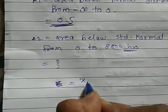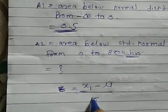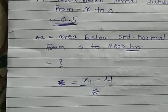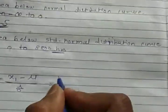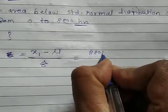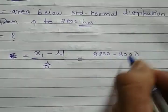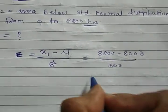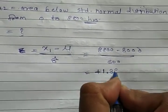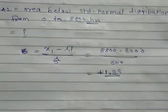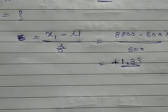Substituting the values: Z = (8800 - 8000) / 600, which gives a positive 1.33.